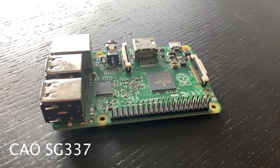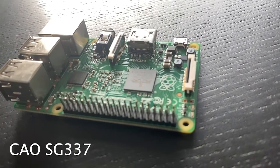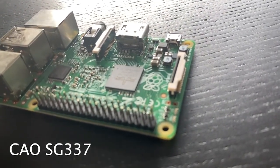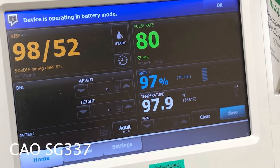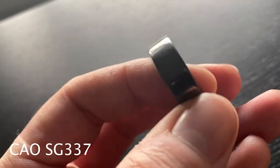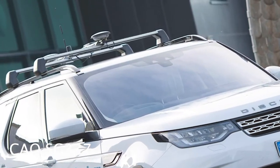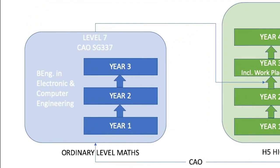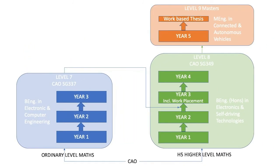If you are interested in technology or engineering, but are not doing higher level maths, why not consider our level seven in electronic and computer engineering? This is a three year programme that looks at the design and development of embedded electronic systems. These are the medical devices that keep us healthy, the consumer devices that keep us entertained, or the controlled systems that keep us safe on the road. You can then progress on to the level eight in electronics and self-driving technologies, and from there to the masters. Check out the link below for more information.